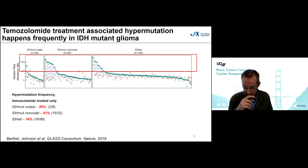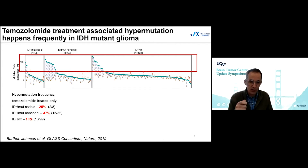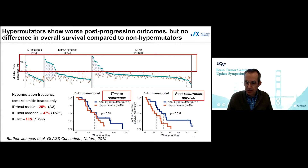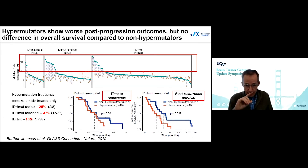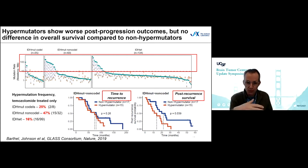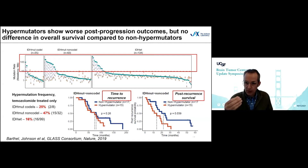This result was described in the first GLASS consortium paper, first-authored by Floris Barthel and Kevin Johnson. When we compared survival patterns, we focused on the IDH mutant non-codel group because it has the largest number of cases where we can distinguish hypermutators and non-hypermutators. We don't see a significant difference in the time to recurrence — the surgical interval — between hypermutators and non-hypermutators.